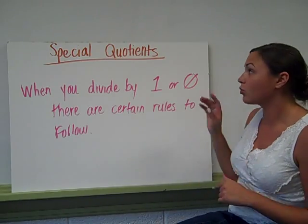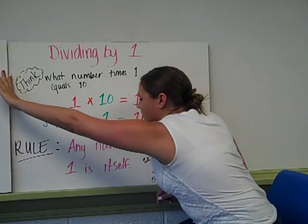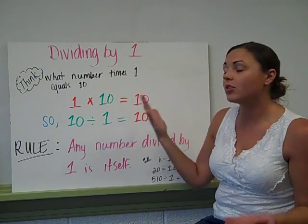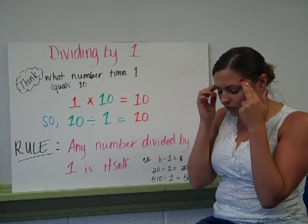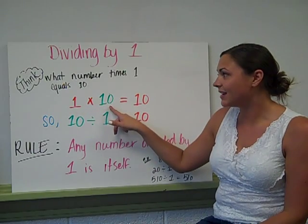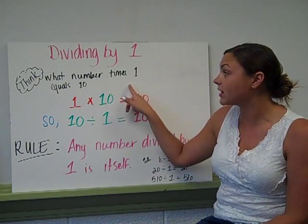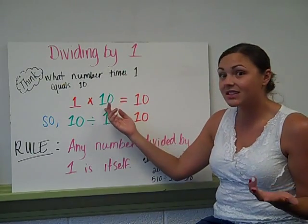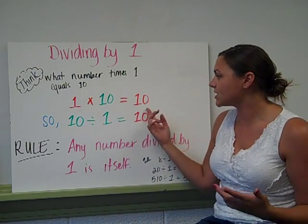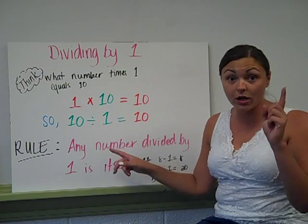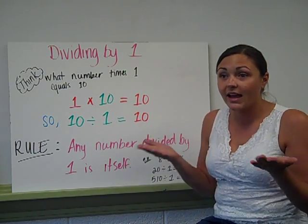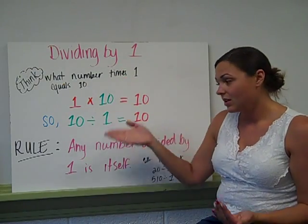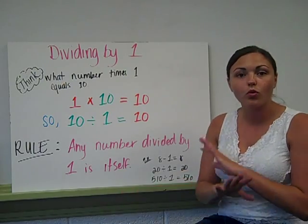There are certain rules that we have to follow. Rule 1: dividing by 1. Think: what number times 1 equals 10? So if we have the problem 10 divided by 1, you have to think to yourself, what number times 1 is going to give me 10? Well, that's simple. 1 times 10 gives me 10. So if I take the number 10 and divide it into only one group, how many is going to be in that group? 10. The rule for dividing by 1 is any number divided by 1 is itself, regardless of the number.